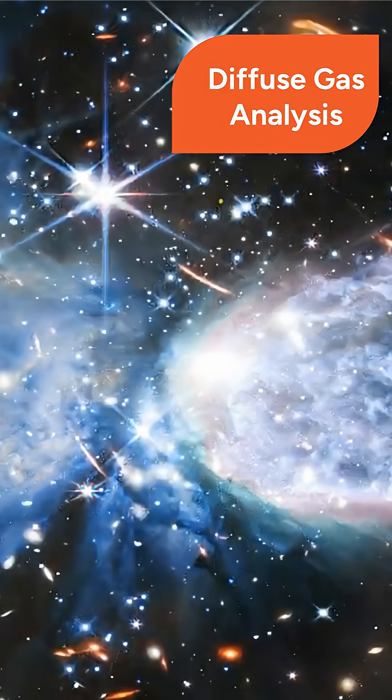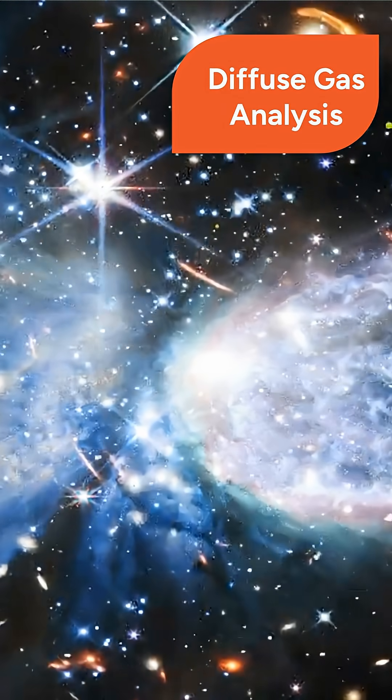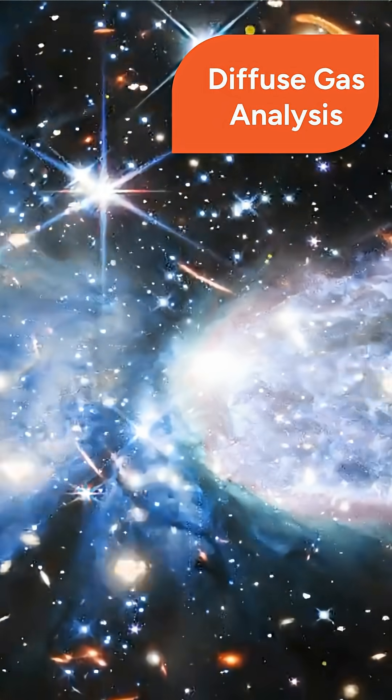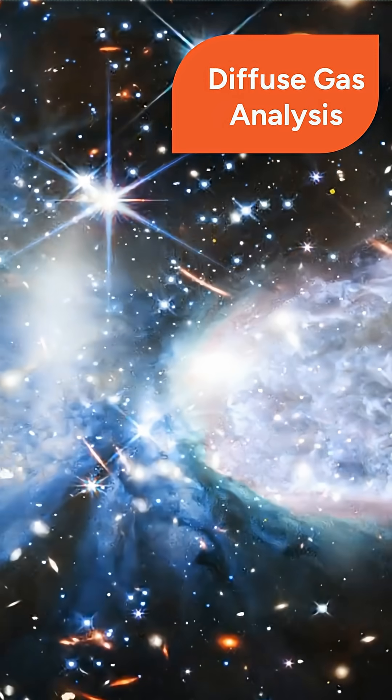Spectral analysis of the diffuse gas revealed two phases at 0.15 keV and 0.55 keV, with the hotter phase being more extended beyond the disk.